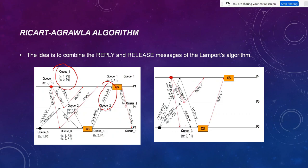The queue only maintains those who are willing to go into the critical section at that time, and the release part is totally removed from this Ricart-Agrawala algorithm. So we can say that the Ricart-Agrawala algorithm is an optimized version of the Lamport's algorithm. In the next slide we see how the algorithm works step-by-step.